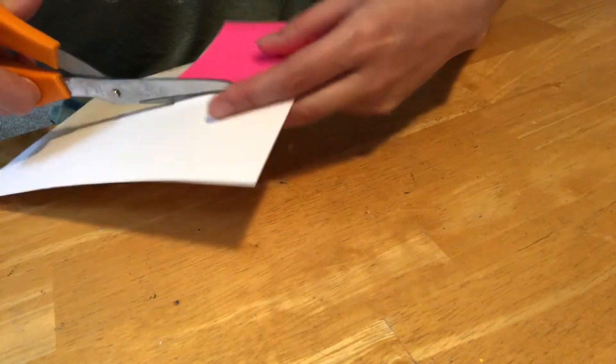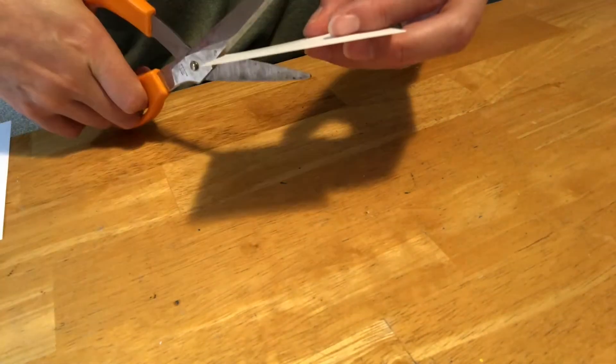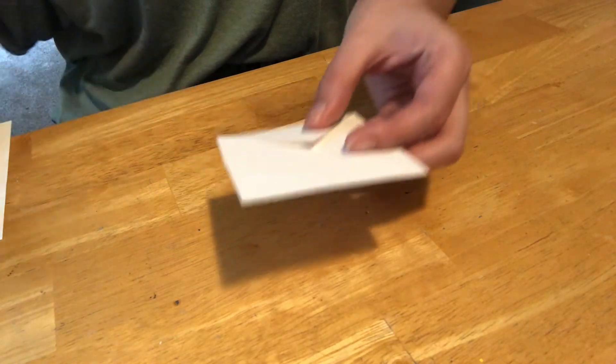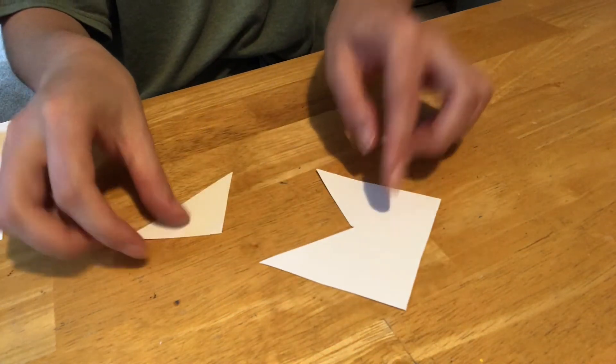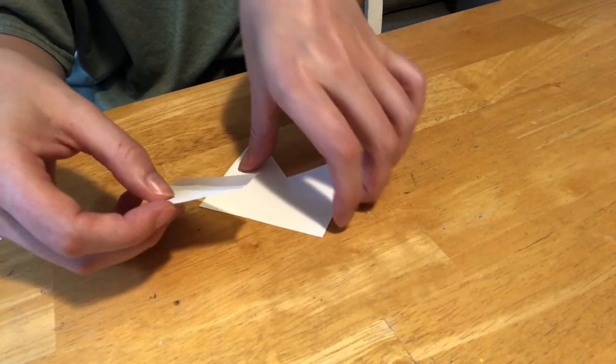Cut around the post-it note, then take your square of cardstock and cut whatever shape you want out of one side. I chose to cut out a triangle. Then tape that triangle to the opposite side so that the straight edges line up.